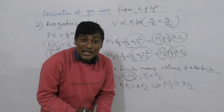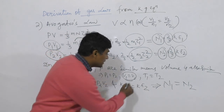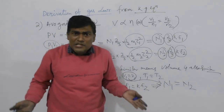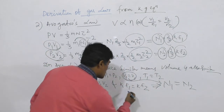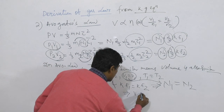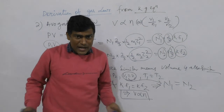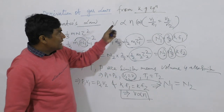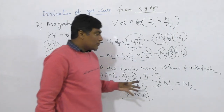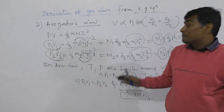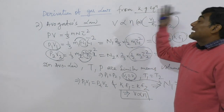If volumes are equal, equal numbers of molecules are present. Since V1 equals V2 implies N1 equals N2, that means V is directly proportional to N. Thus Avogadro's law is derived from the kinetic gas equation.